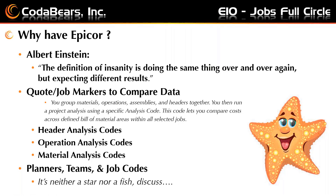The definition of insanity — everybody knows this one from Albert Einstein — doing the same thing and looking for different results. If I don't take that engineering info back to the estimator or quoter and I'm going to make that job again, you're going to make the same mistakes.